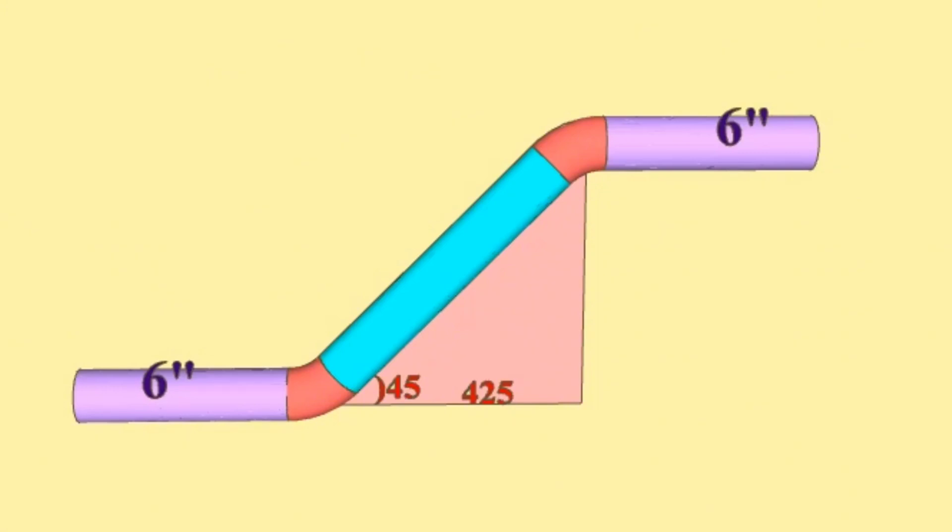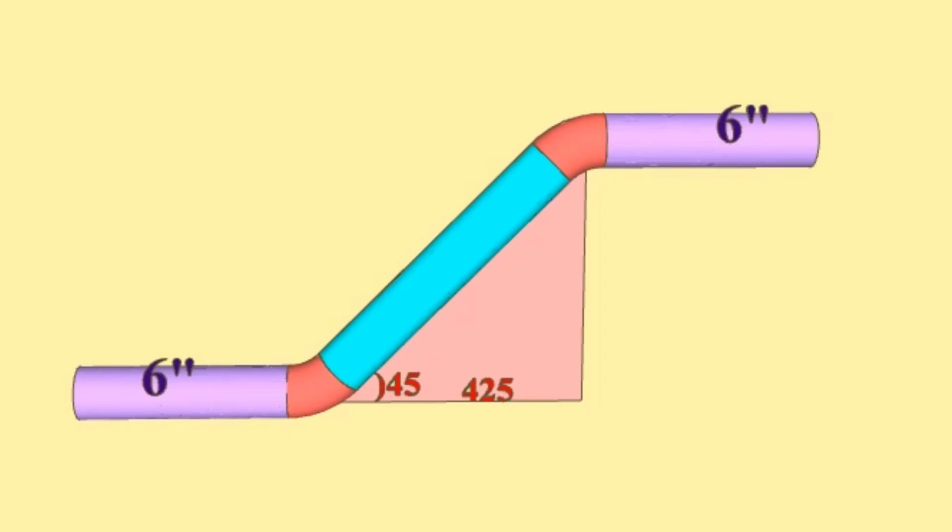To find the distance between the centers of the pipe elbows, we will use this right triangle formed by dashed lines. Let's complete these dashed lines to a right angle triangle. The hypotenuse of the right angle triangle will be the distance between the elbows in the pipeline. Let's mark the hypotenuse of this right angle triangle with big letter H.